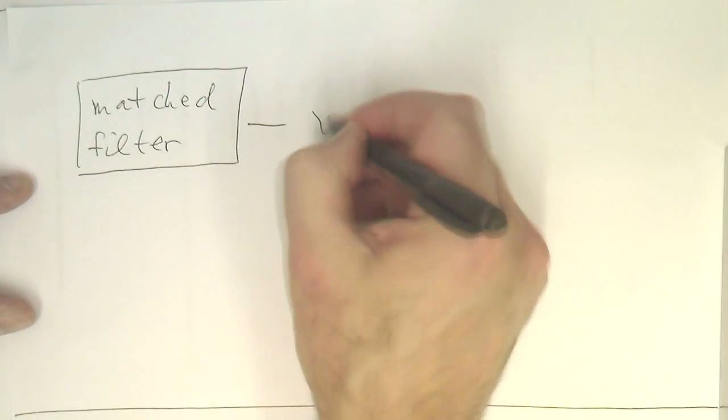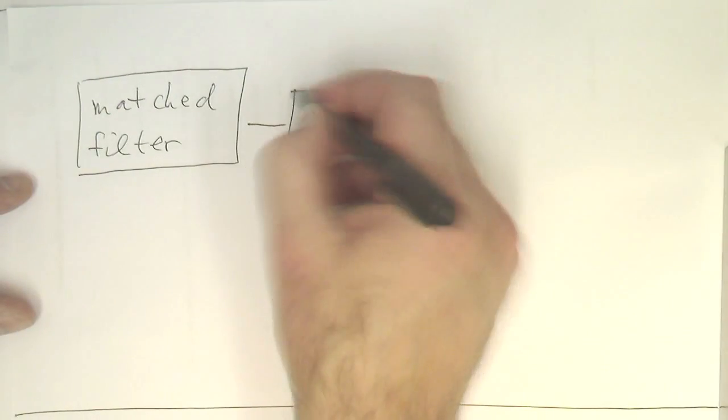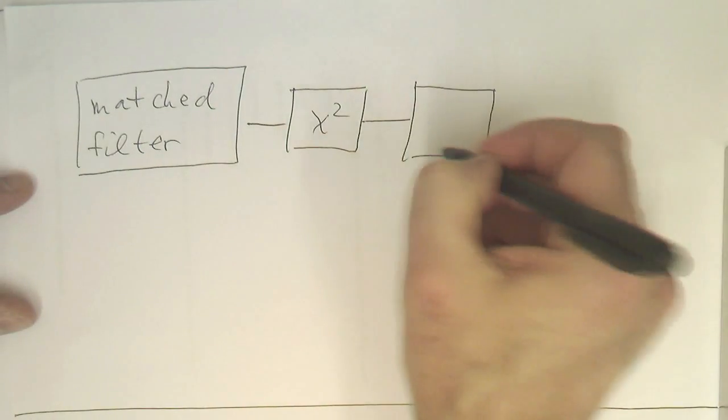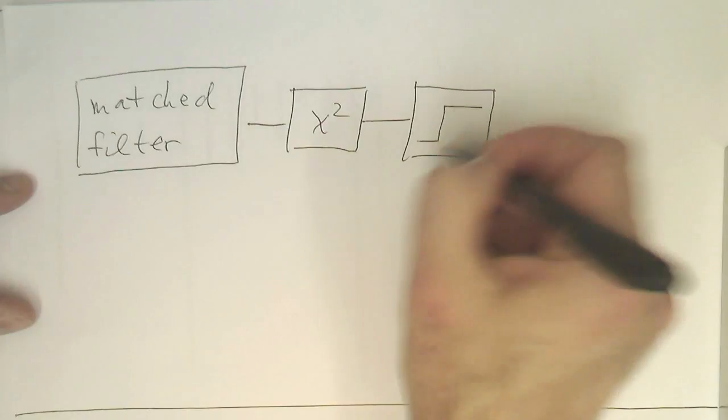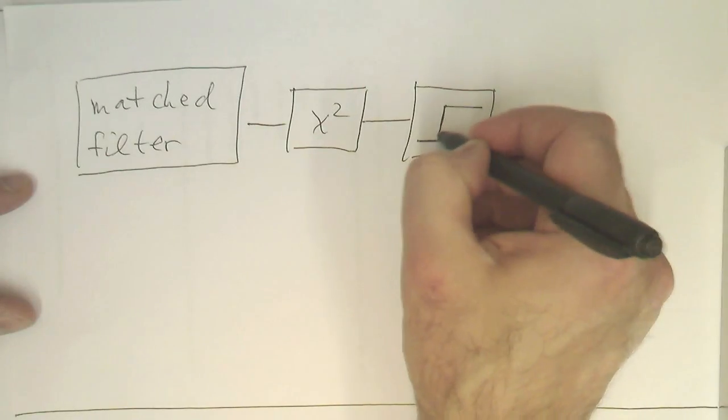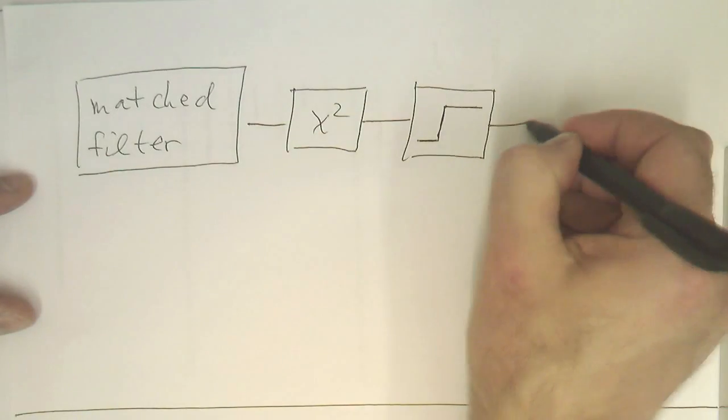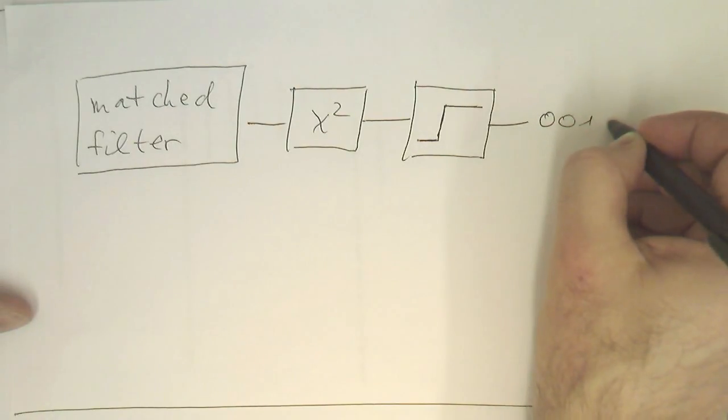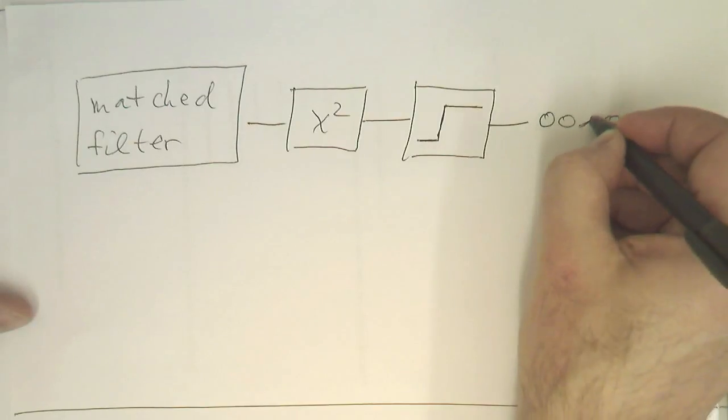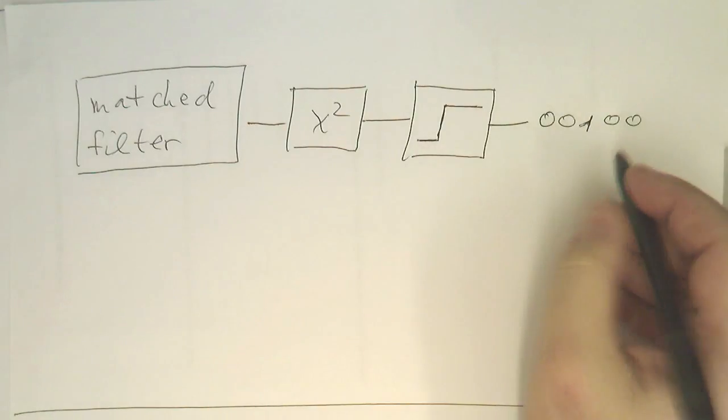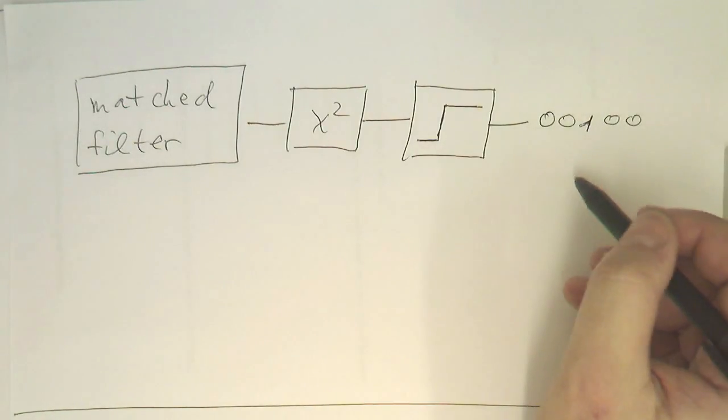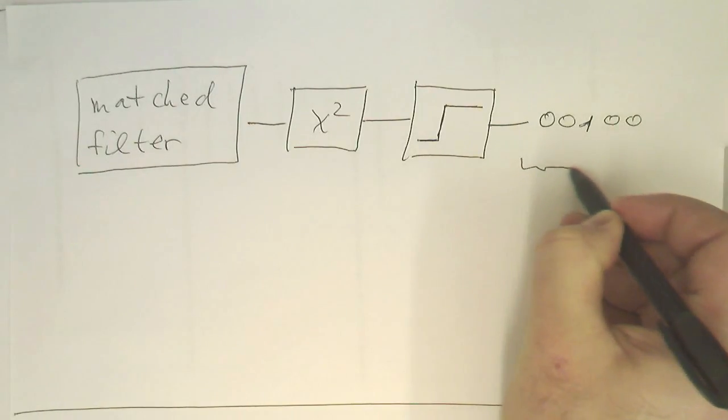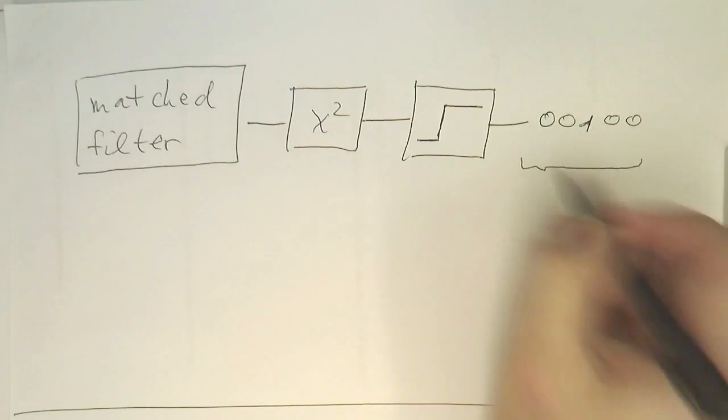And then, after this, we have our threshold deciding if there has been a heartbeat or a detection or not. And then, after that, we are getting a stream of 0s and 1s out there for the detection. So, now we could stop there. But, we could still work on this here to make it even more reliable or more error-free.